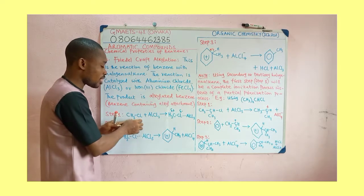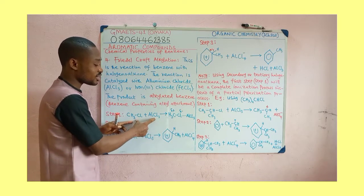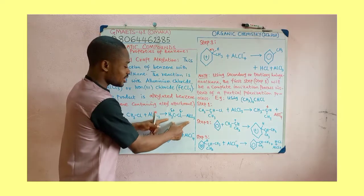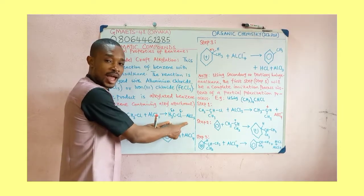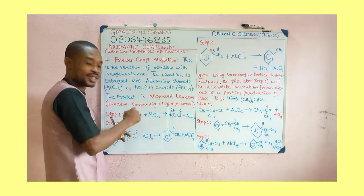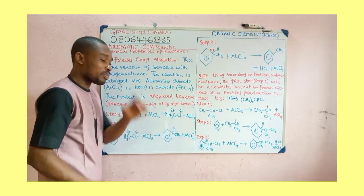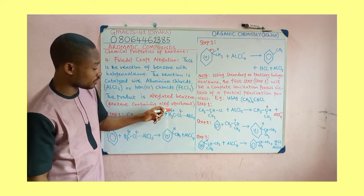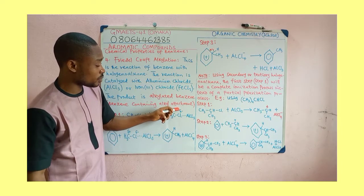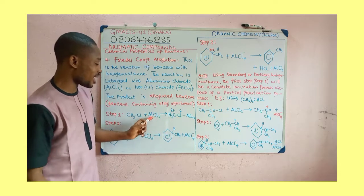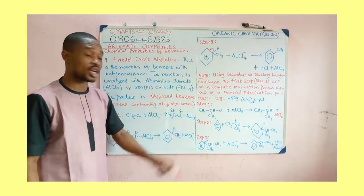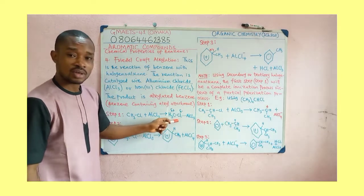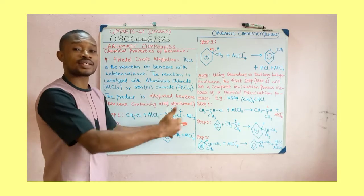If you use a primary haloalkane and react it with the Lewis acid catalyst, what you are going to get is a complex as a result of partial polarization of the alkyl. You see a partial positive charge on the carbon and a partial negative charge on the chlorine of the alkyl, then attached to the aluminium chloride as the catalyst. This complex is a partially polarized compound.